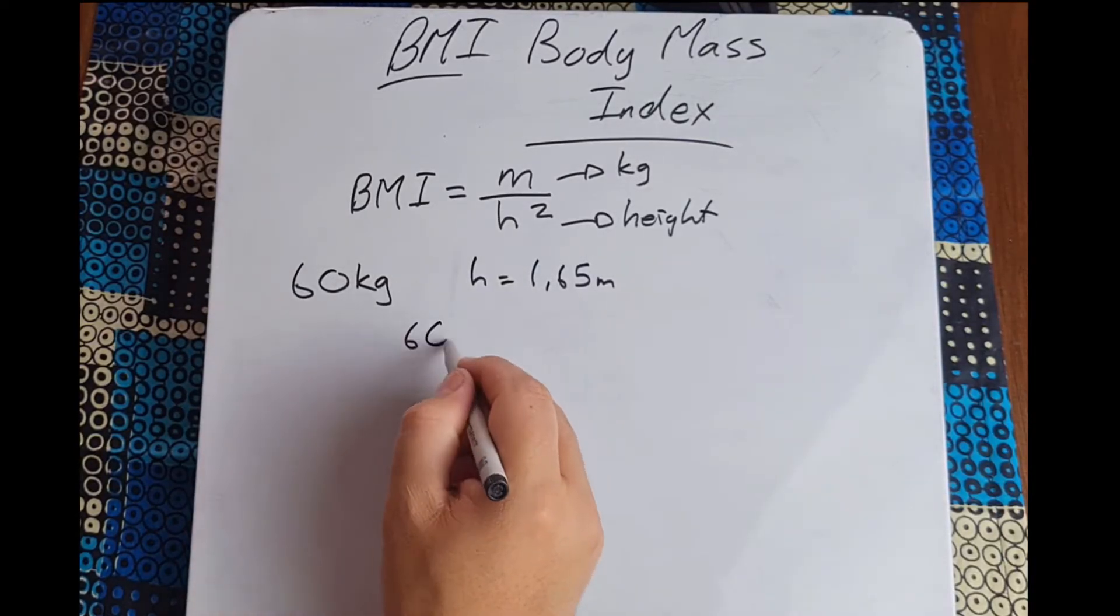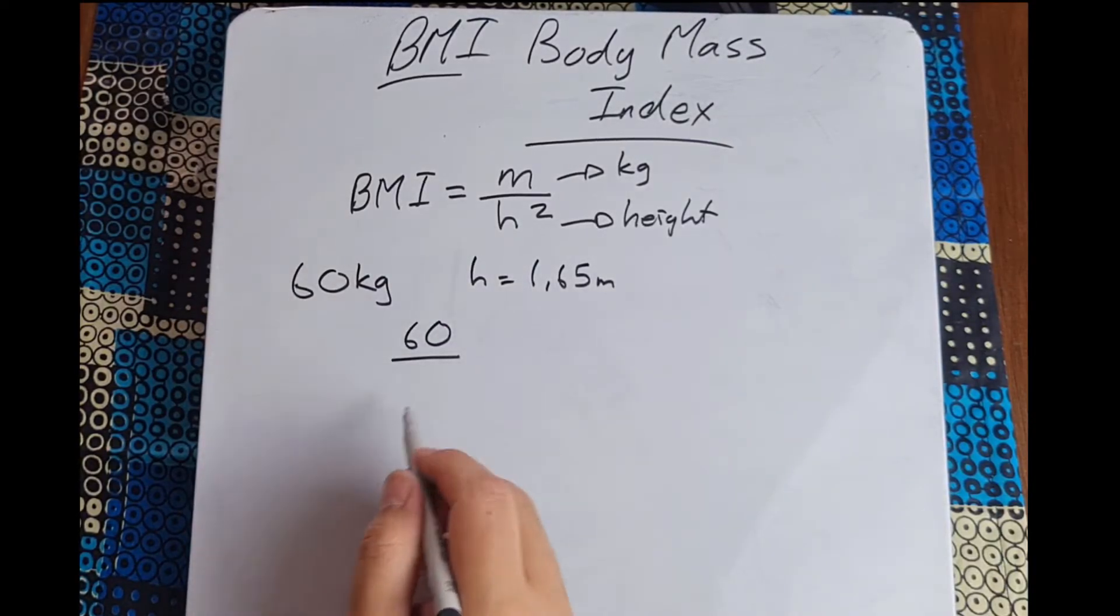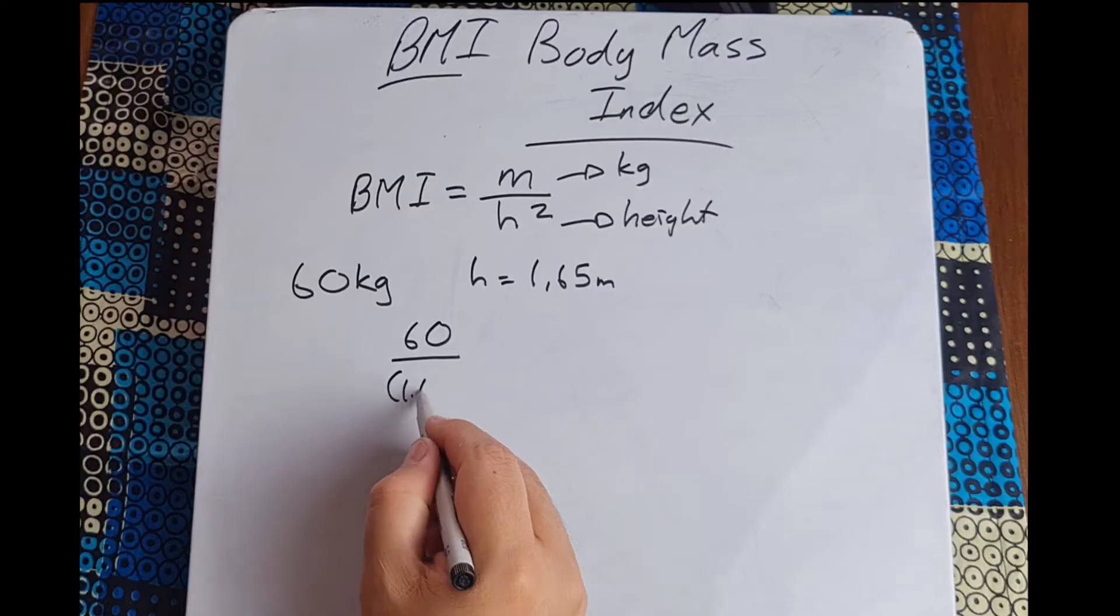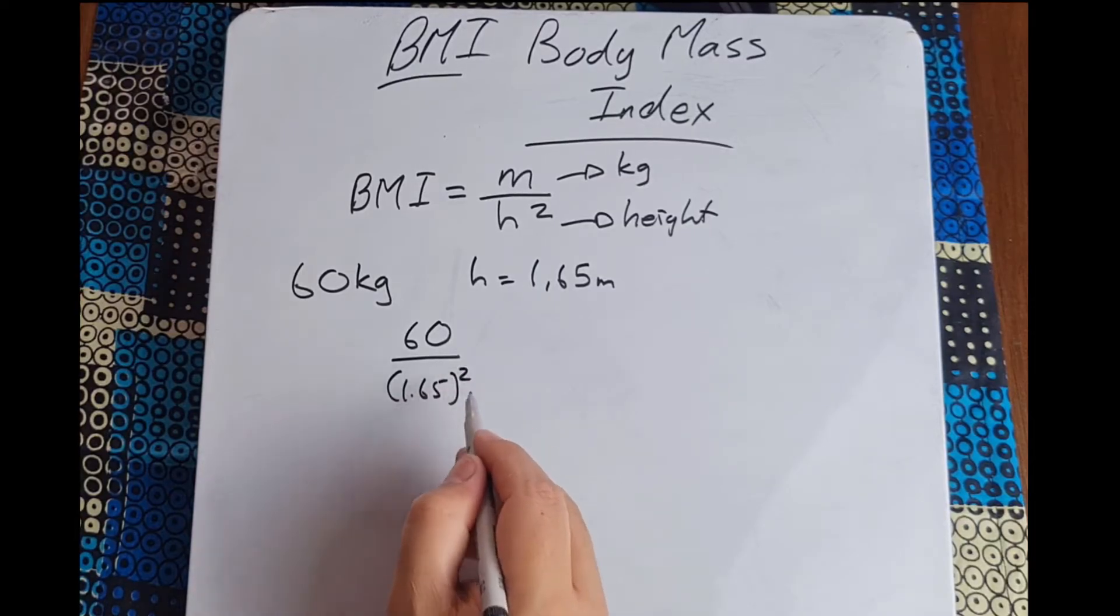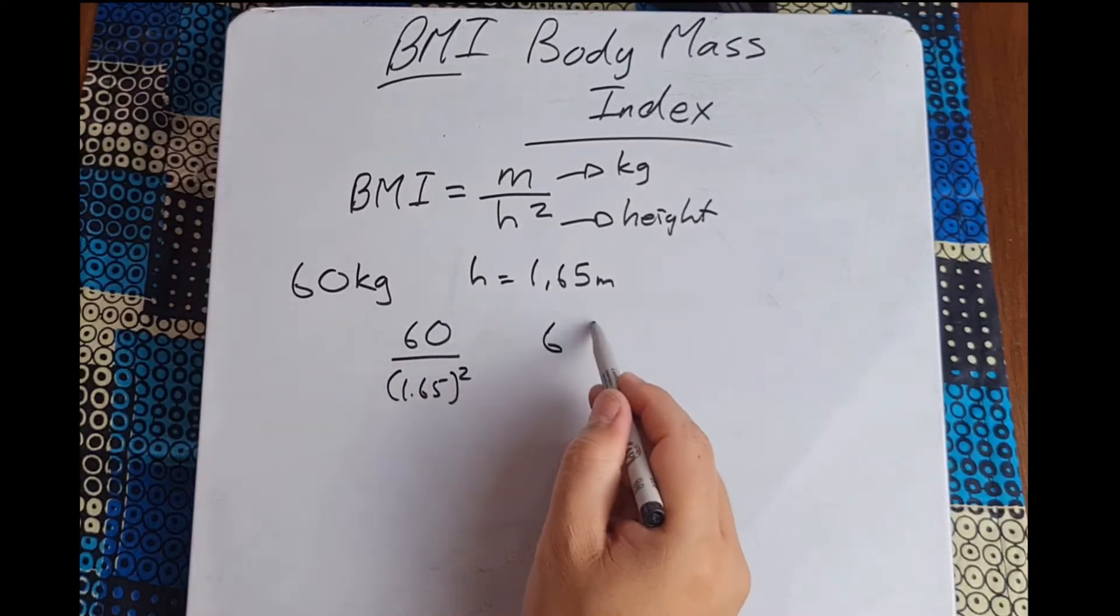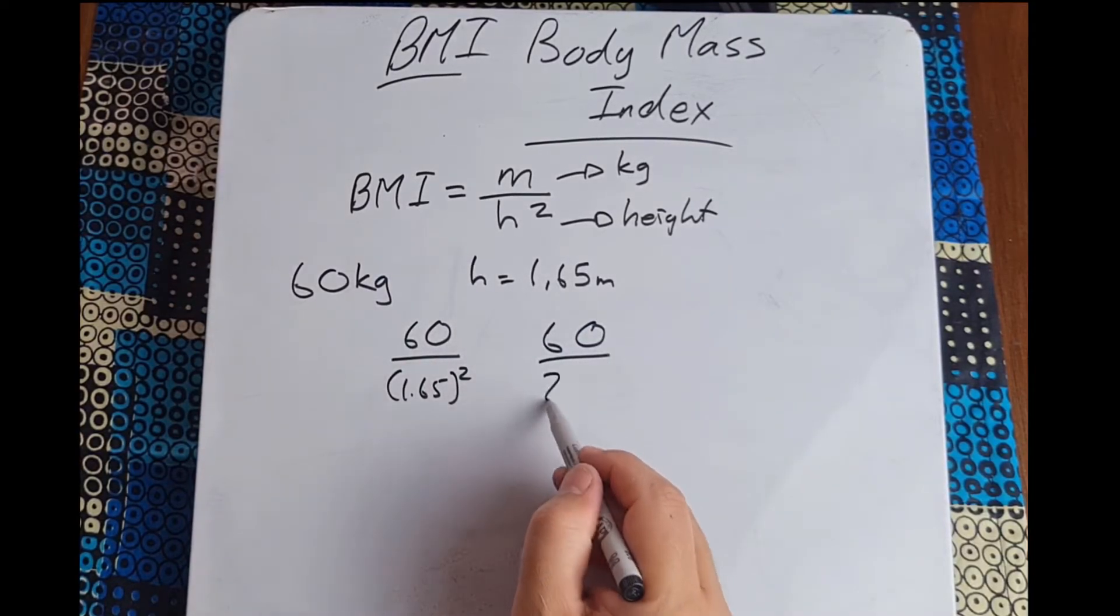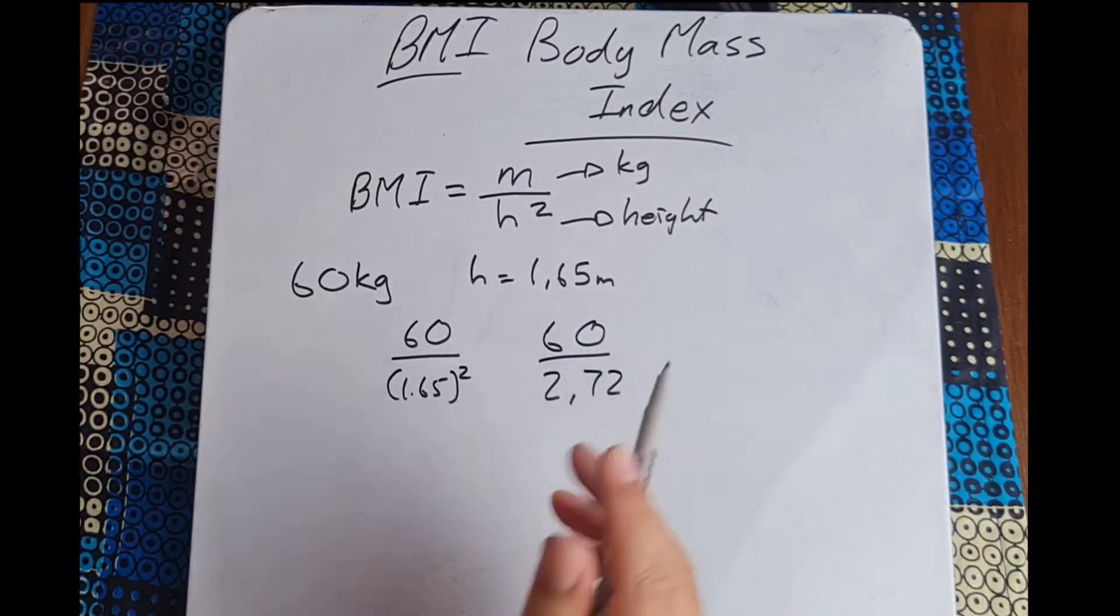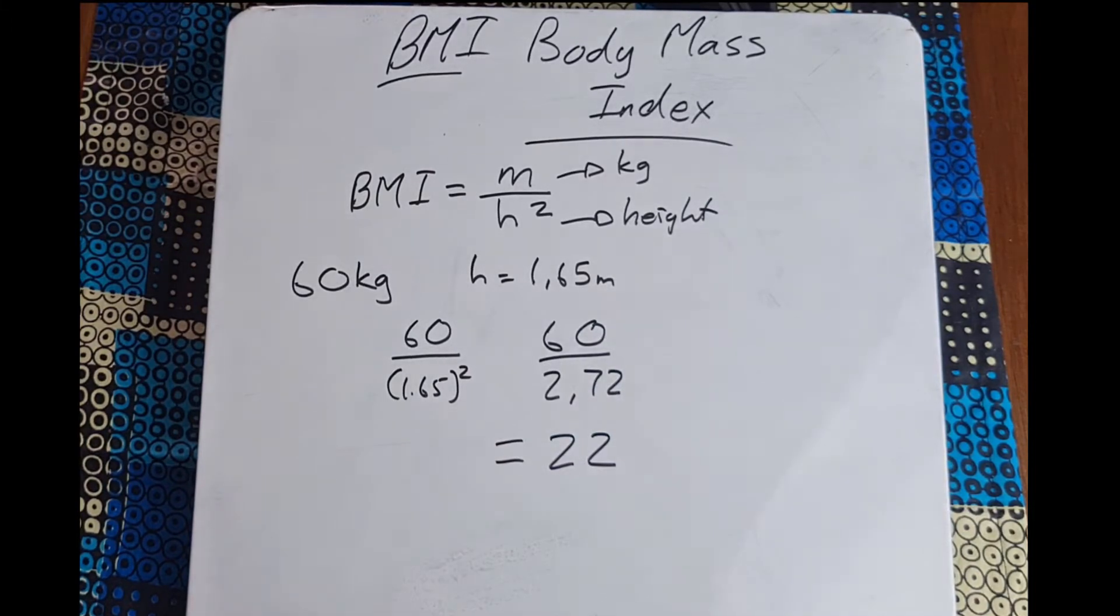So let's use our formula. It would be 60 over 1.65 and we would square that, so that would be 60 over 2.72 and that would then give me a score of 22.